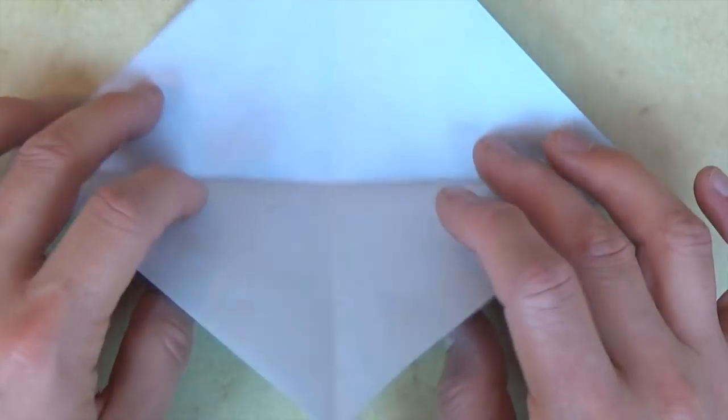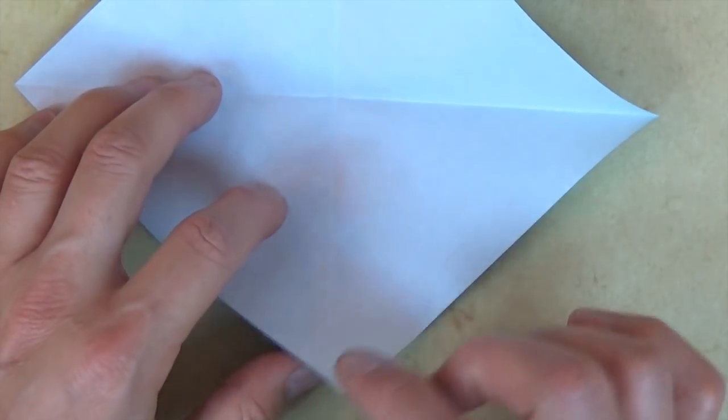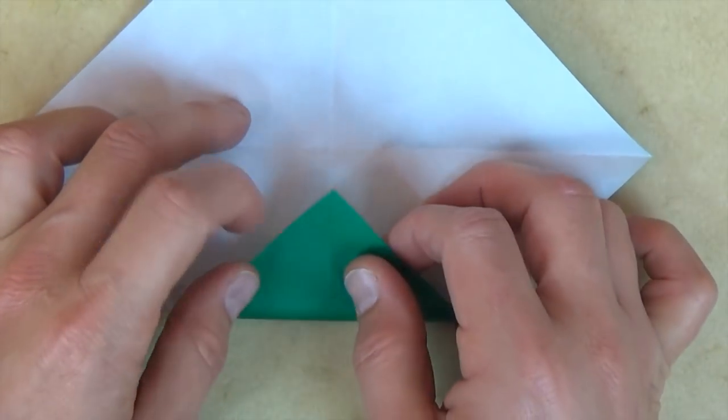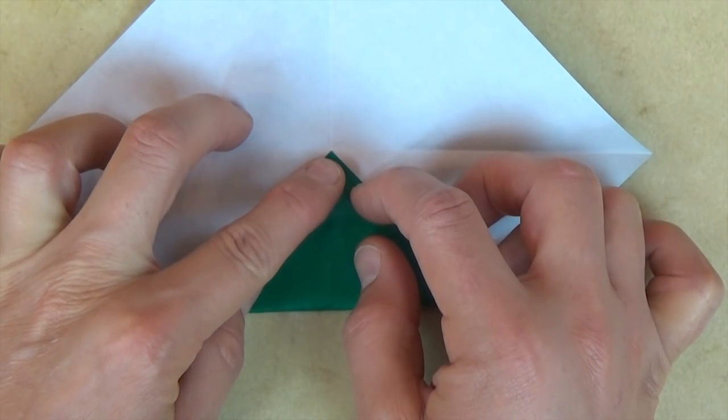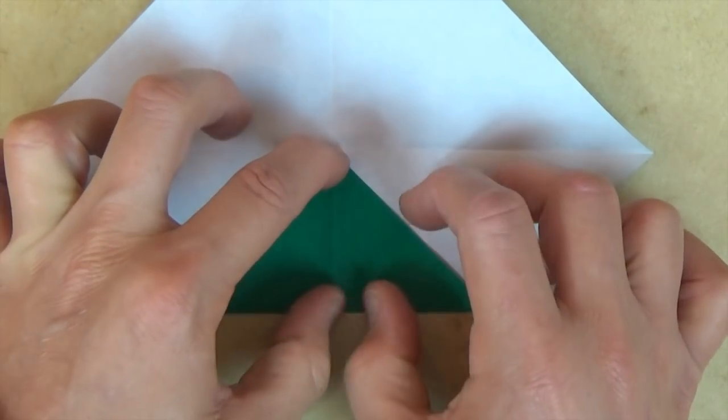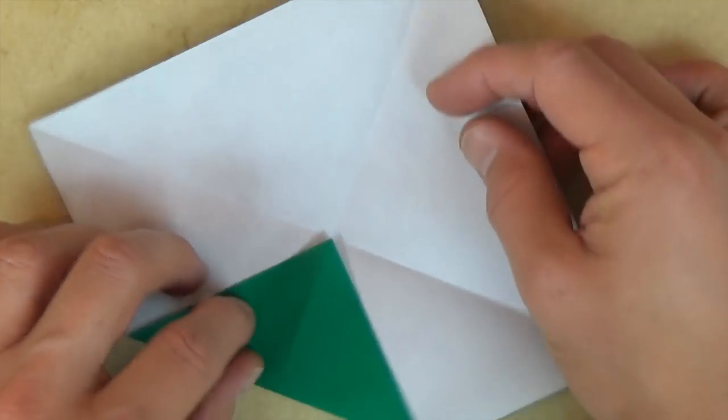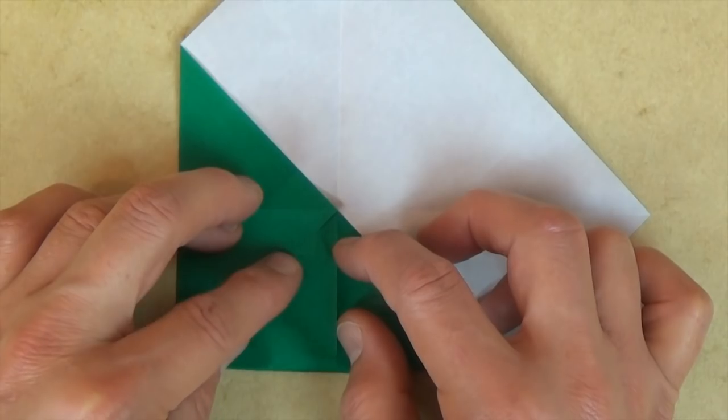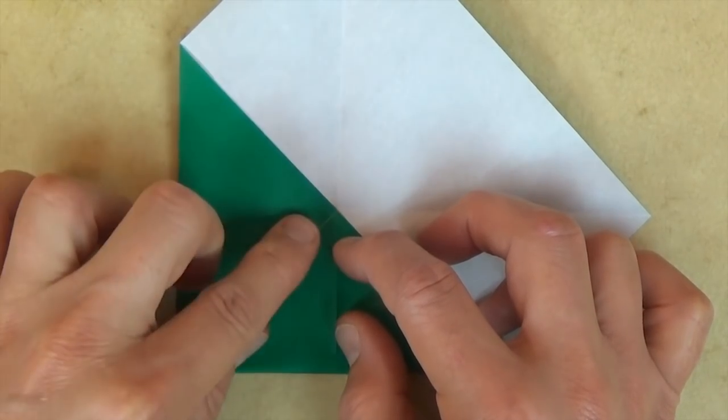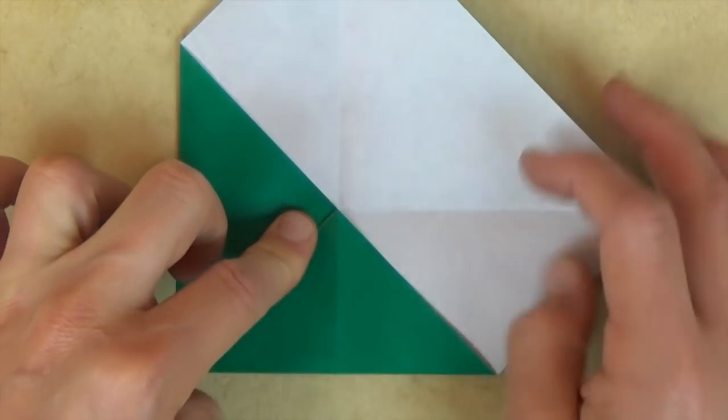Unfold and now let's fold this corner to the middle and repeat on the other three corners. So rotate and just fold all the corners to the middle. This is called a blintz fold.